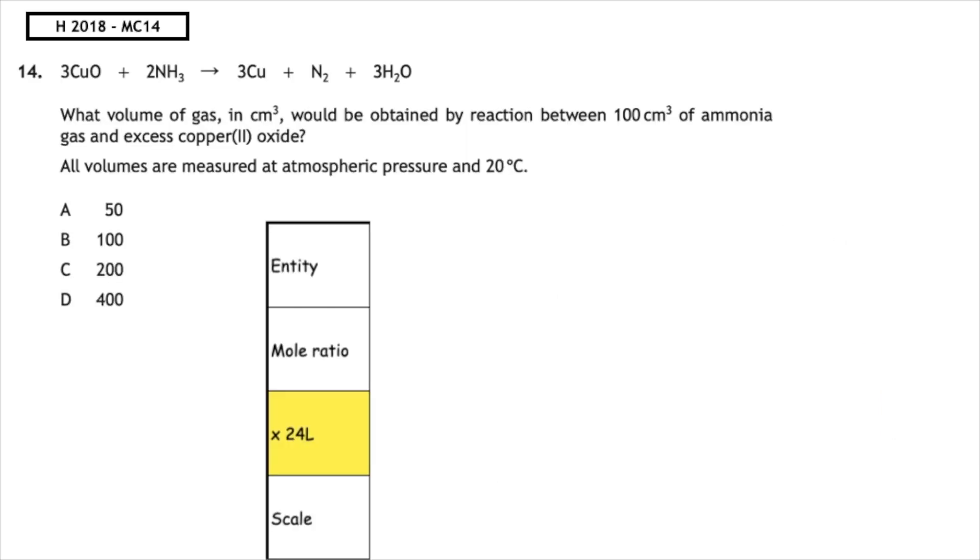This past paper question is from the higher 2018 multiple choice 14. What volume of gas in centimetres cubed would be obtained by the reaction of 100 centimetres cubed of ammonia and excess copper 2 oxide? All volumes are measured at atmospheric pressure and 20 degrees.